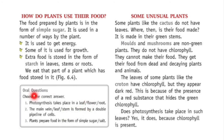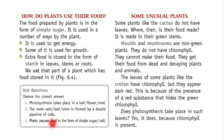There are a few questions. Photosynthesis takes place in: leaf, flower, or root? It takes place in a leaf. The main vein is formed by a double pipeline of cells — the correct answer is the main vein. Plants prepare food in the form of simple sugar or salt? The answer is obviously simple sugar.